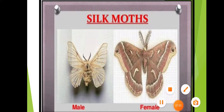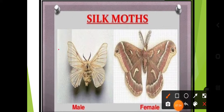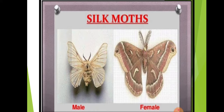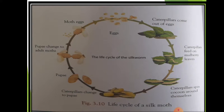Here you can see the silk moths — this is the male moth and this is the female moth. In simple terms they look like butterflies. Silk moths have both male and female forms.